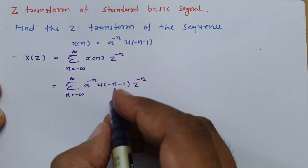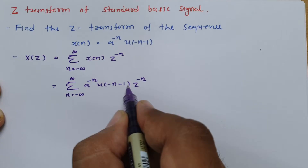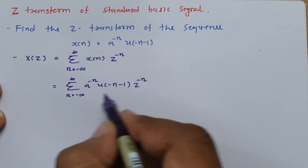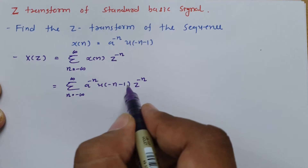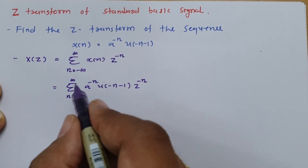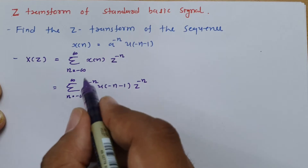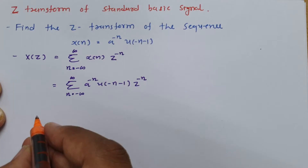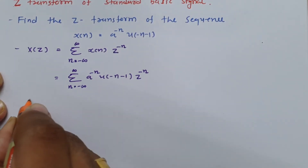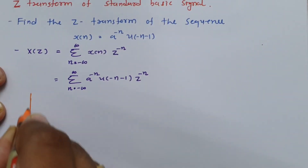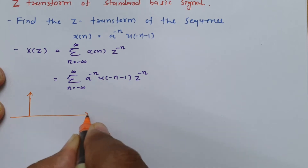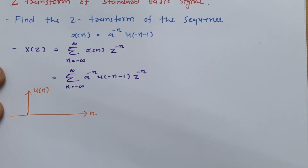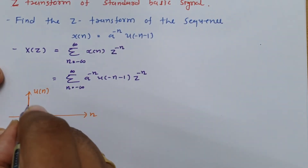Here we have u(-n - 1). The unit step function with the -n and -1 shifting will change the summation limits. To understand how, let us recall the discrete unit step signal. When given u(n), the discrete unit step signal starts from 0 and continues.